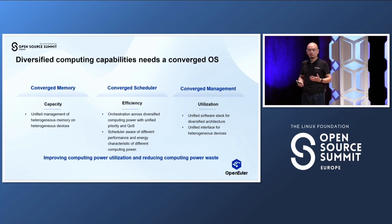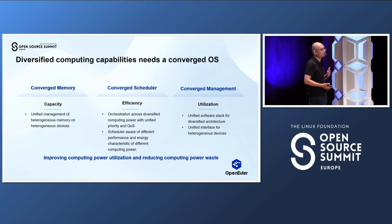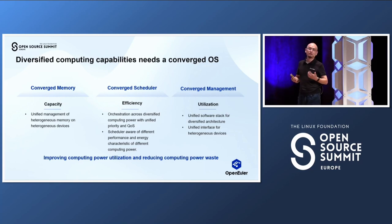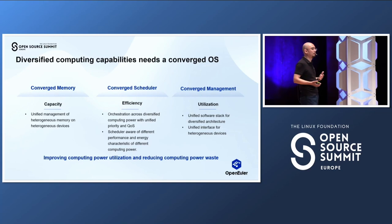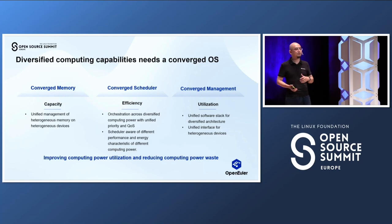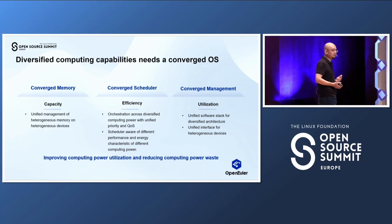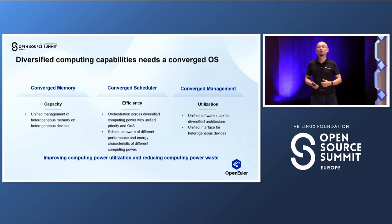All in all, our idea is that for diversified computing in the future, what we really need is a converged OS. The OS will no longer manage diversified computing devices as separate devices. Instead, we want to unify and converge them all together into one, so the operating system can manage, allocate resources, and schedule across them from a global point of view. By doing that, we are able to improve computing power utilization, reduce computing power waste, and achieve a better future for us all.